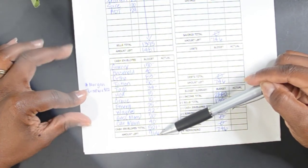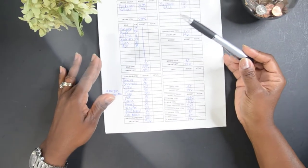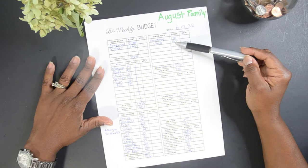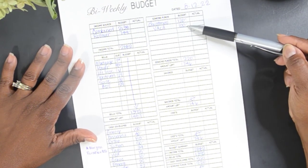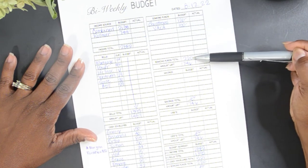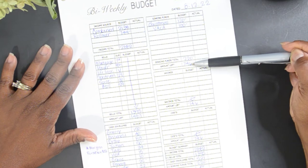So that will leave us with $966. So for sinking funds, we have Christmas, which will get $120, and vacation will get $100. So that's a total of $220, which will leave us a balance of $746.